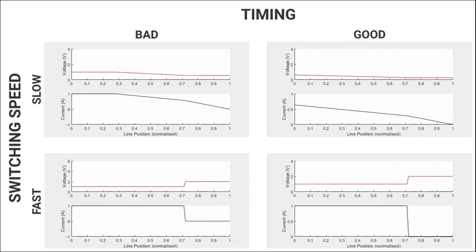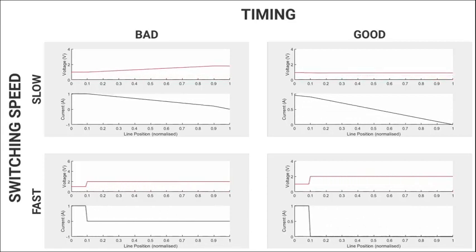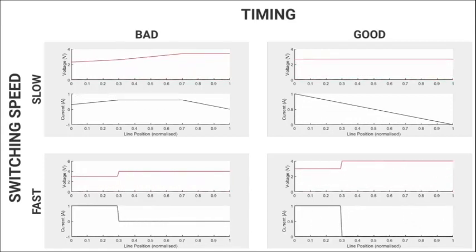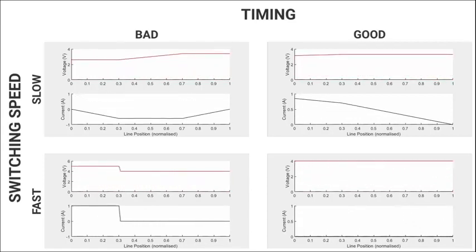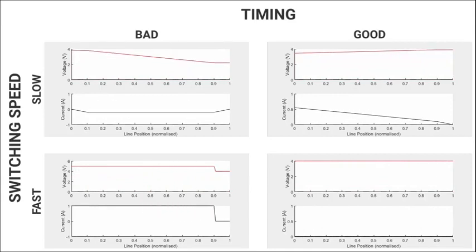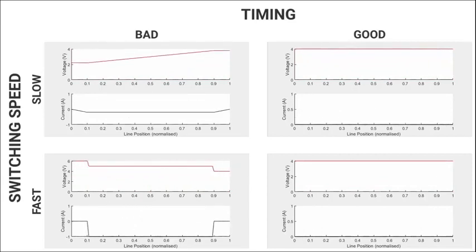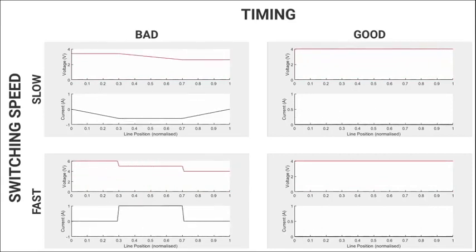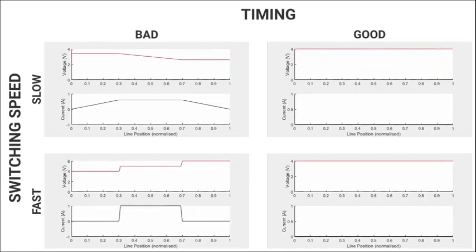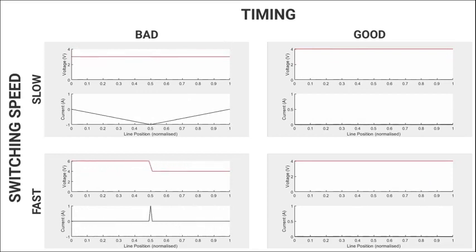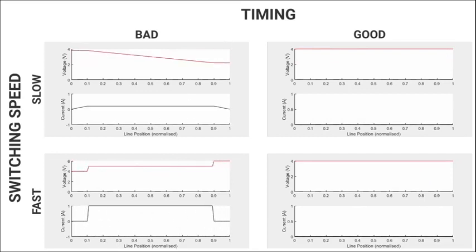The following plots represent the spatial distribution of the voltage and current waveforms in a capacitor line for different combinations of switching speeds and timings. When we stop charging the capacitor, we notice that the voltage distribution is flat for good timings, however it oscillates for bad timings, which is undesirable.